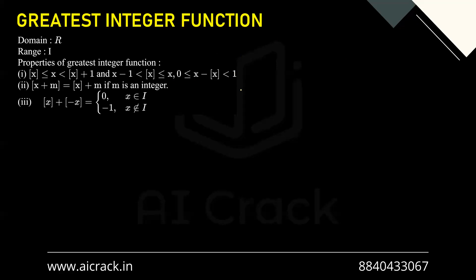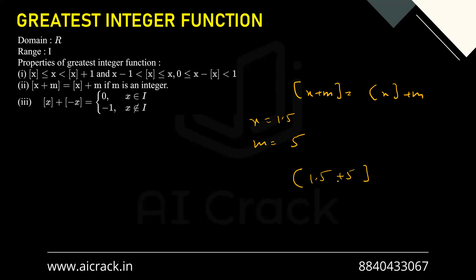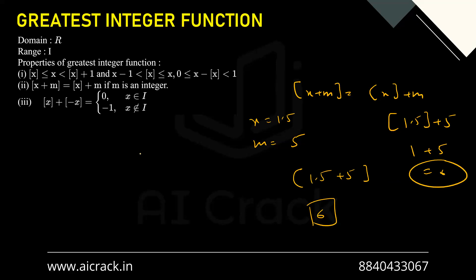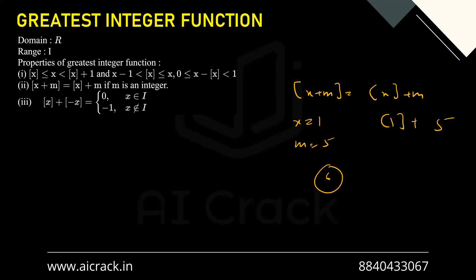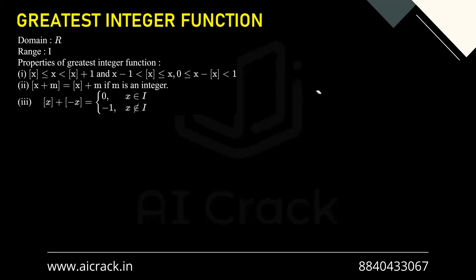The fourth property is GIF(x + M) = GIF(x) + M, where M is an integer. For x = 1.5 and M = 5: GIF(1.5 + 5) = GIF(6.5) = 6. And GIF(1.5) + 5 = 1 + 5 = 6 ✓. For x = 1 (integer) and M = 5: GIF(6) = 6 and GIF(1) + 5 = 1 + 5 = 6 ✓. This holds for both integral and non-integral values.